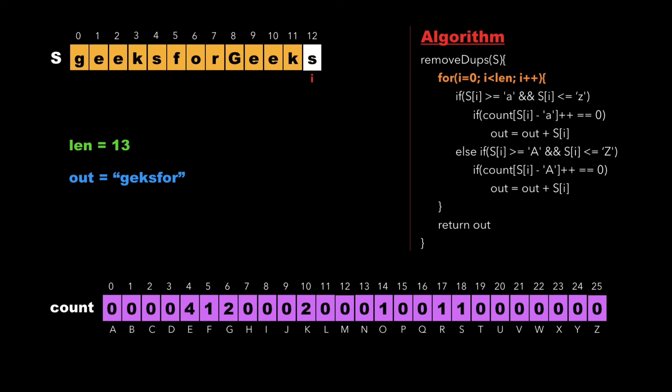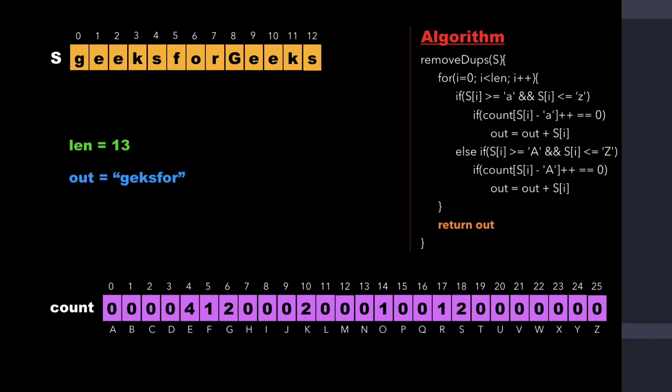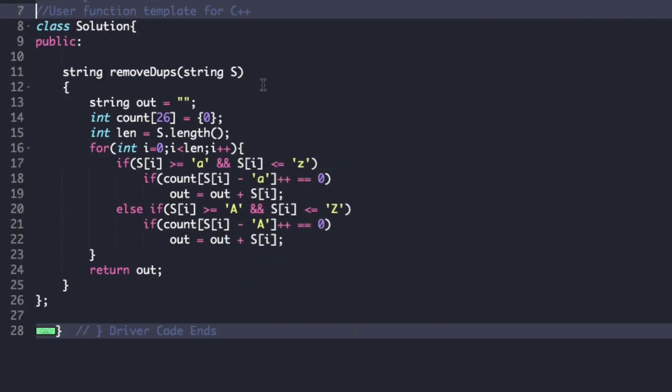Finally, we have completely traversed the string and the value of i is now equal to 13, which is not less than the length value. Therefore we exit the for loop and return the value of 'out'. So our output will be 'g', 'e', 'k', 's', 'f', 'o', 'r'. Now let's have a look at the actual code.